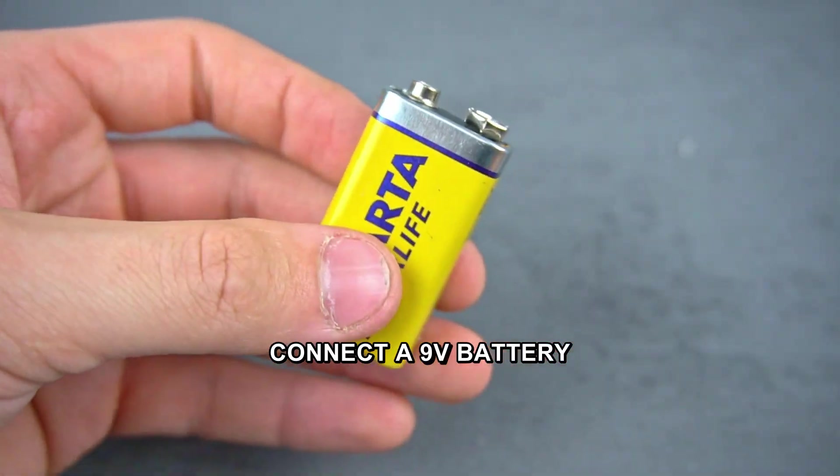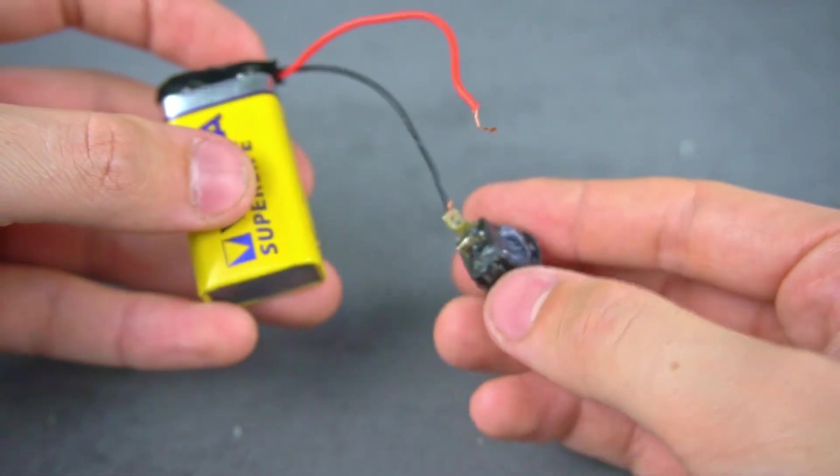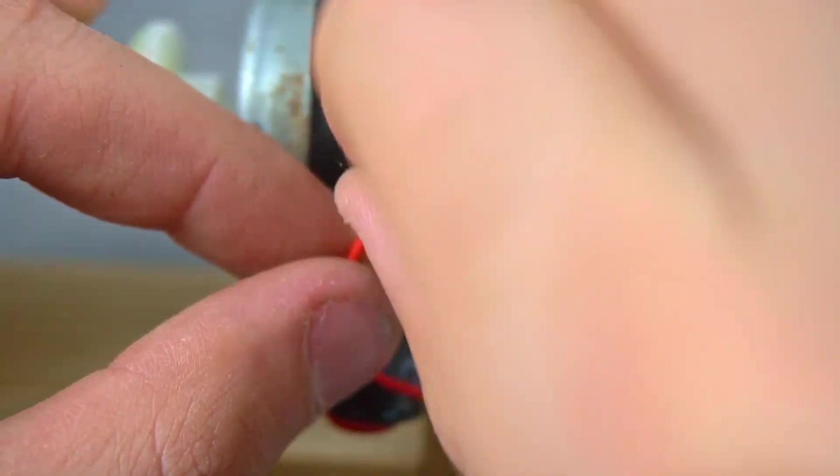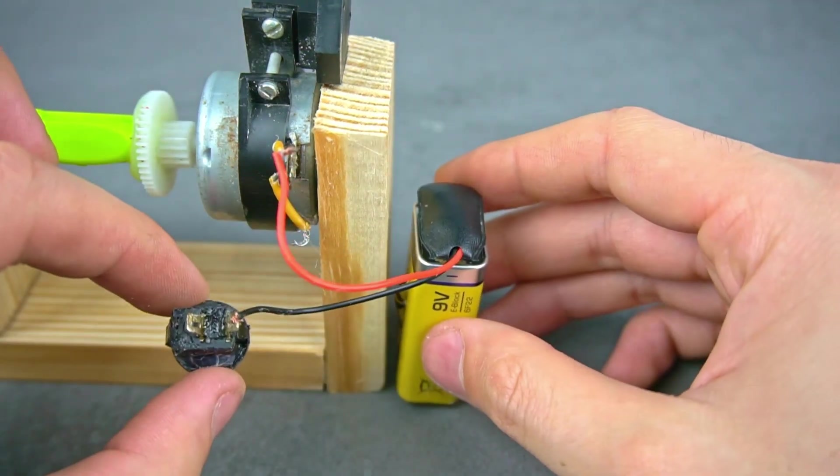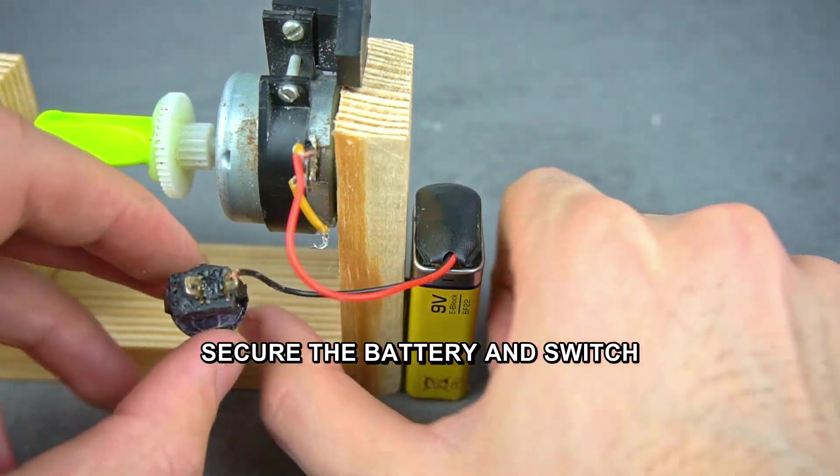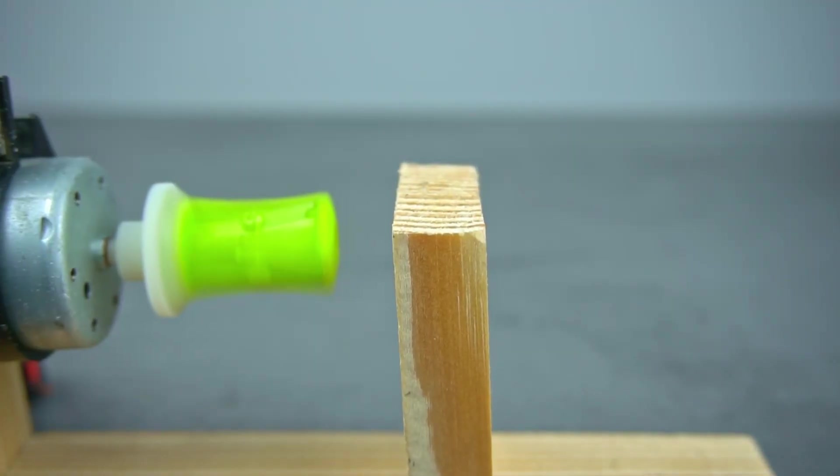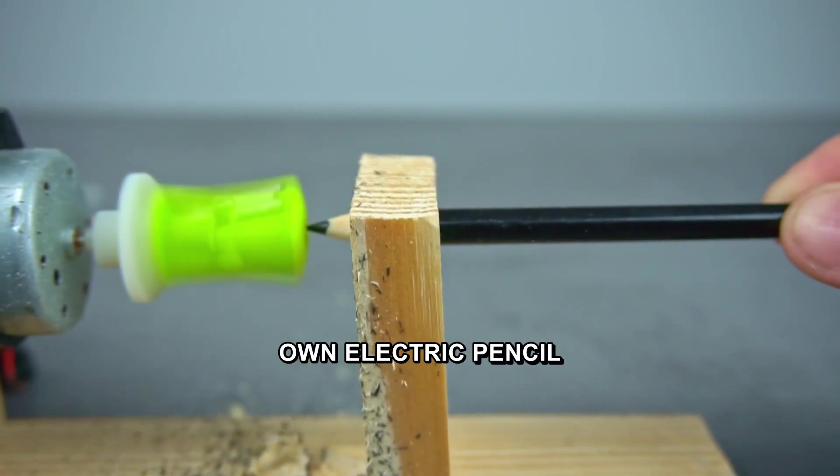Connect a 9V battery through a switch to the electric motor. Secure the battery and switch to the stand. Done! Now you have your own electric pencil sharpener.